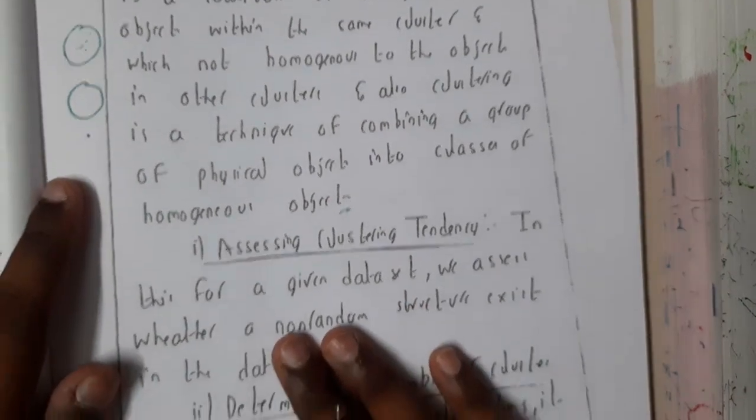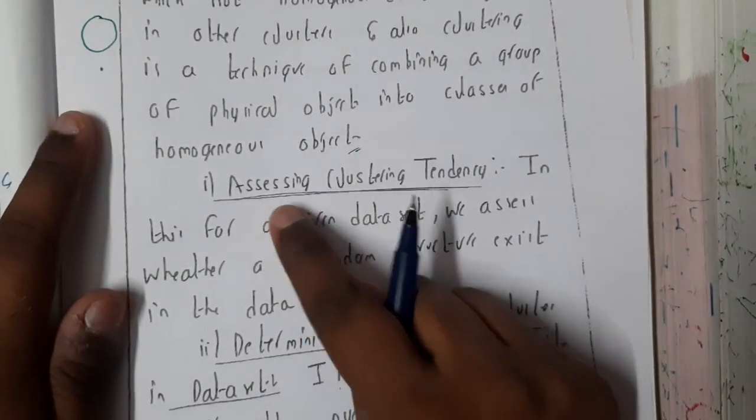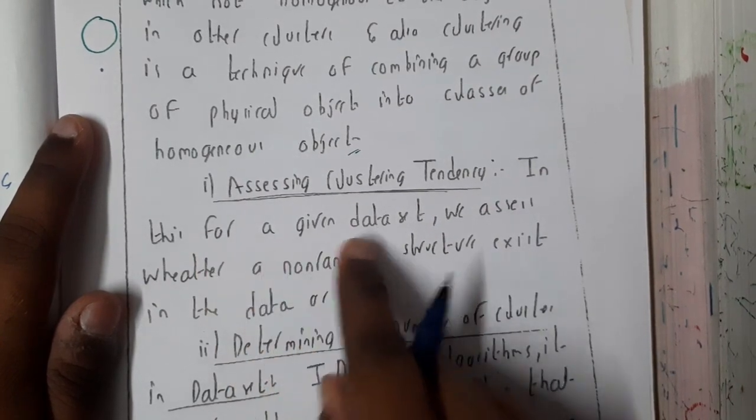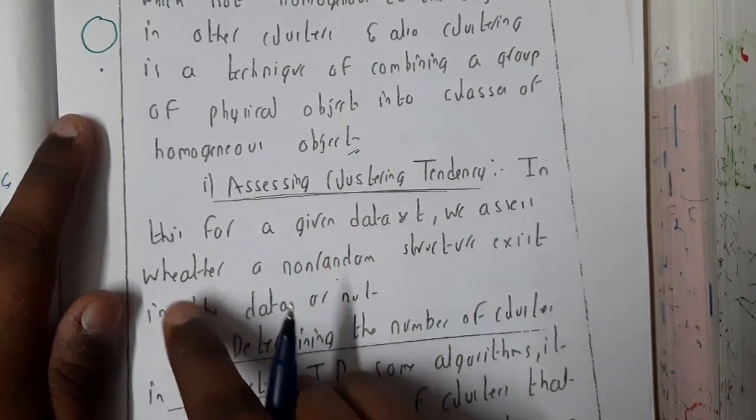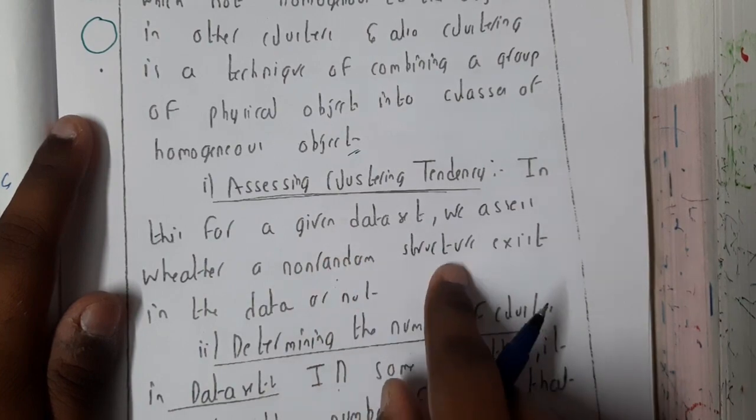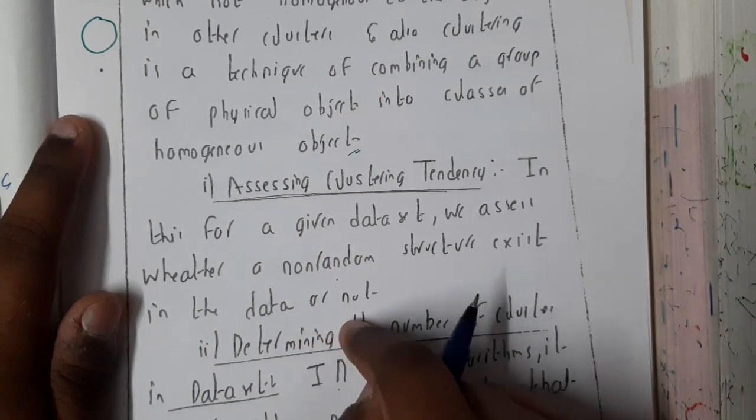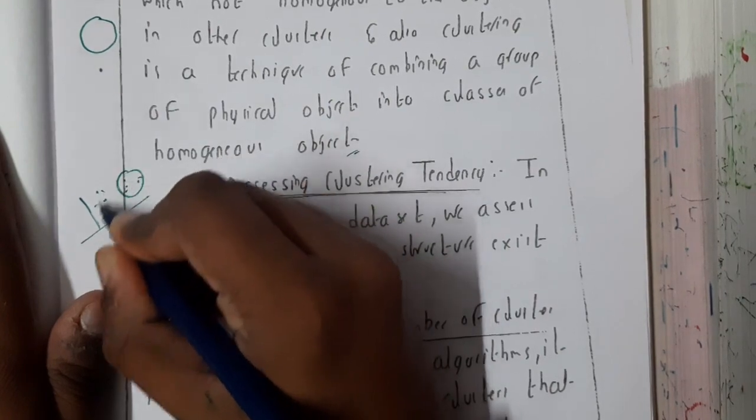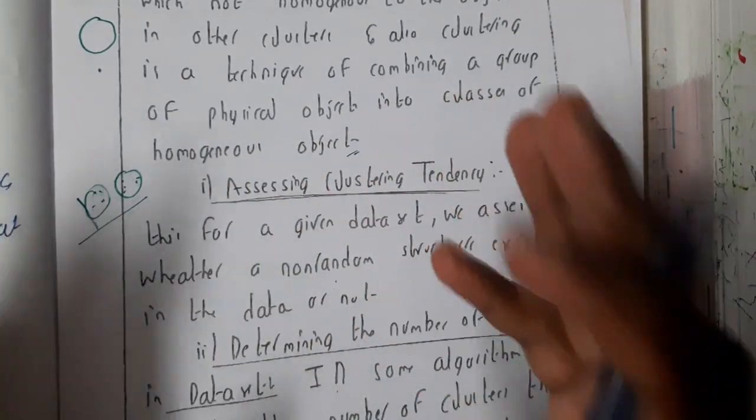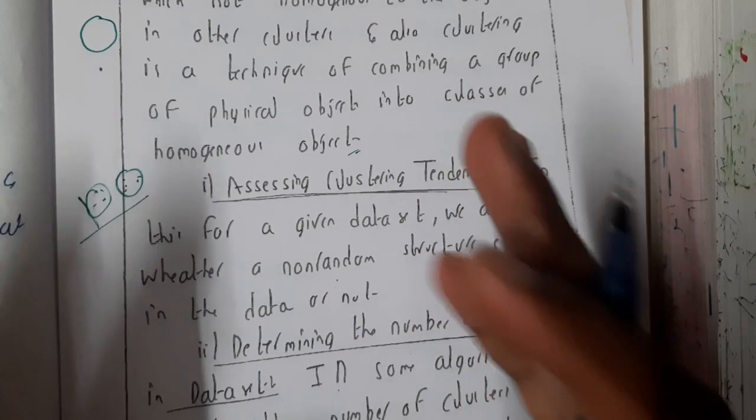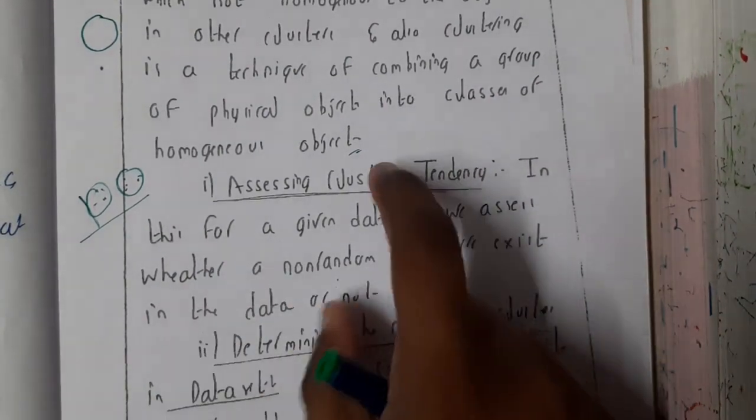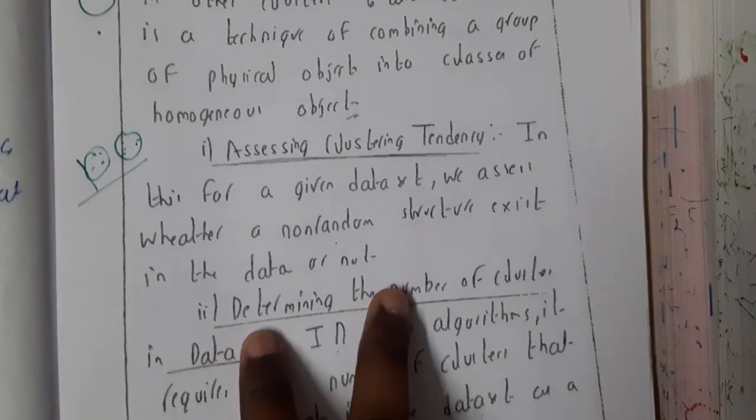The first method is assessing cluster tendency. So in this, for a given data set, we assess whether a non-random structure exists in the data or not. So basically, whenever we get data and make it into a cluster, is there any relation between those shapes or symbols or anything? That is what we will be evaluating here.